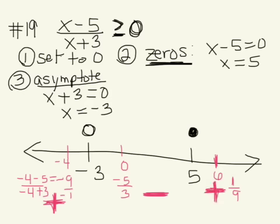So if we go back to our original problem, we're looking where is this rational expression greater than or equal to 0. Numbers that are greater than or equal to 0 are positive. So positive results are 5 and greater, and positive results are less than negative 3.